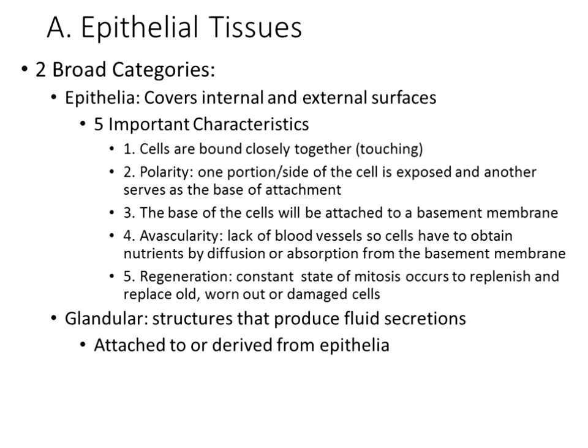Epithelial tissue has two broad categories: one that protects underlying tissue—part of the immune system—and one that forms glands. For an effective barrier, certain characteristics are universally found. First, the cells must be very closely interconnected to each other. By being connected and touching, there are fewer gaps or spaces for items to leak in or out. Epithelial cells tend to touch the cells around them, creating an effective cellular barrier.